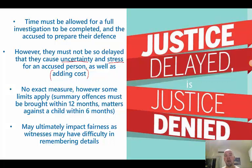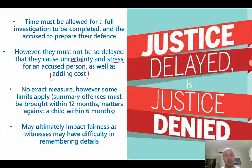Generally, the Magistrates Court has guidelines. The government guideline is that it has to clear 85% of its matters within 12 months, and any matter against a child they want finalised within six months. At last report, the Magistrates Court was clearing about 87 or 88% of its matters within 12 months — above that 85% mark. There's no exact measure, but for summary offences you want it done within a year, and indictable offences around the 18-month mark. It also impacts fairness if you delay too long and witnesses can't remember key details.